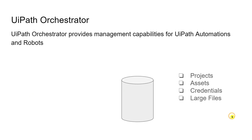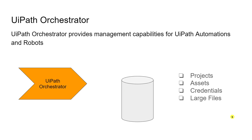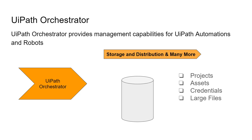There are also storage and distribution capabilities. You can store a project, large files, Excel files, input files for your automation, credentials, assets, and then deploy them to different machines. So UiPath Orchestrator also acts as a storage and distribution solution. At the end, UiPath Orchestrator is a management tool — you can manage many things, as we have seen over these slides, using UiPath Orchestrator.